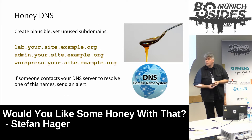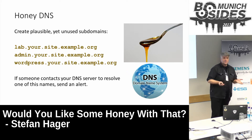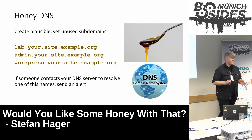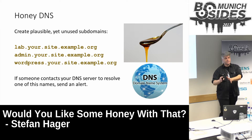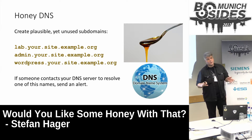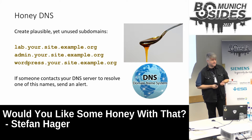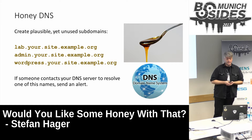Put honey in some DNS. Create a few plausible yet unused subdomains like lab.yoursite.example, admin, WordPress — whatever you're not using. This kind of defeats the purpose if you allow DNS zone transfer, but I'm assuming you don't. So whenever an attacker is checking out your web page and trying out subdomains you might not use, they might stumble upon a honey DNS page. And as soon as your DNS server resolver gets a request for lab.yoursite.example.org, you can actually send out an alert.